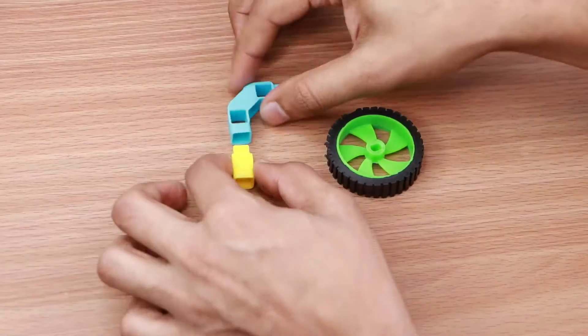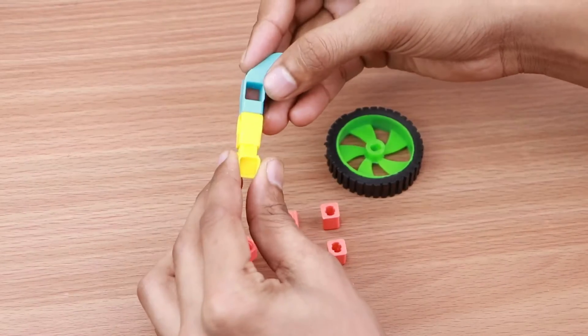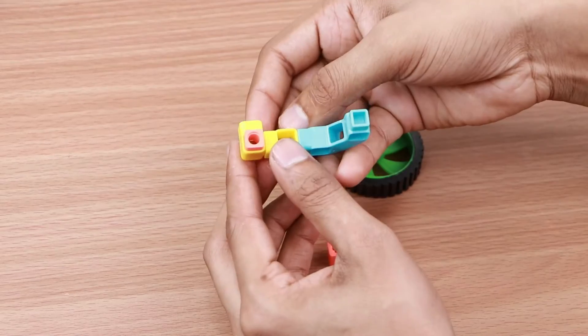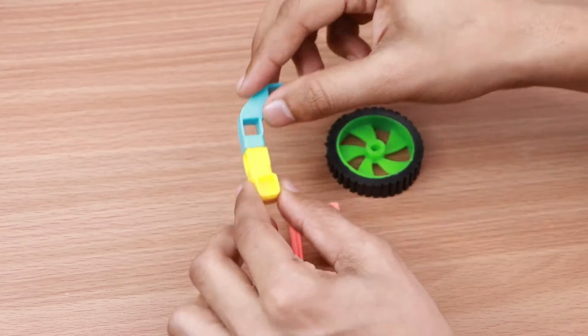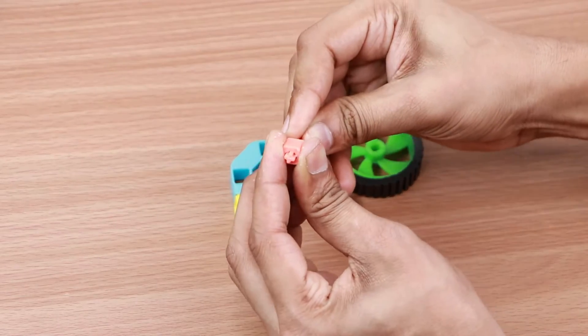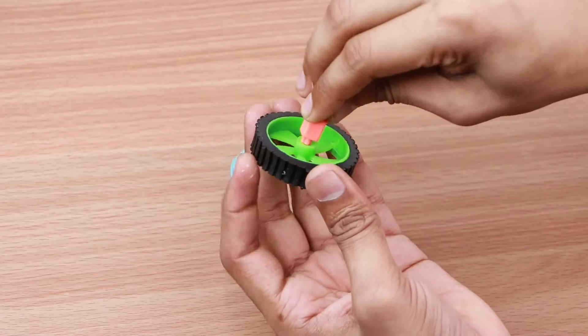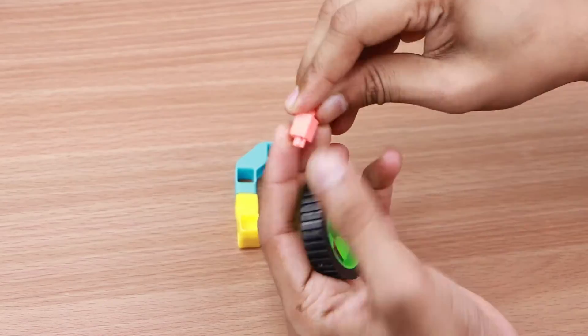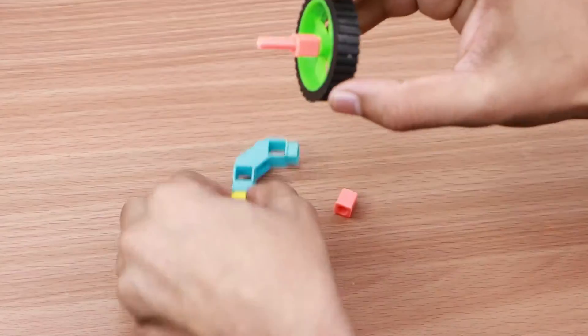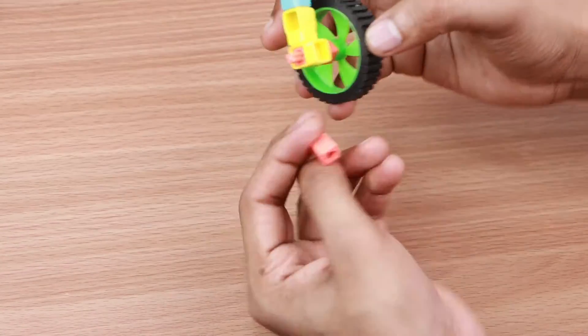Take a three-hole beam, a one-hole beam and a one-hole elbow and join them together. Now take one male axle coupler and slide it into the one-hole elbow. Take a 30mm small axle and attach it to a BO shaft. Connect it to the axle as shown. Now slide the axle through the male axle coupler.